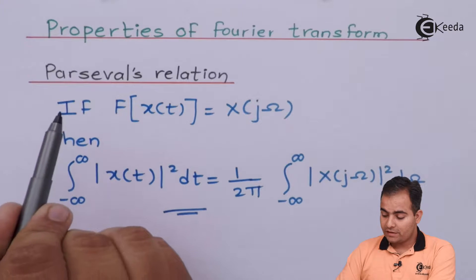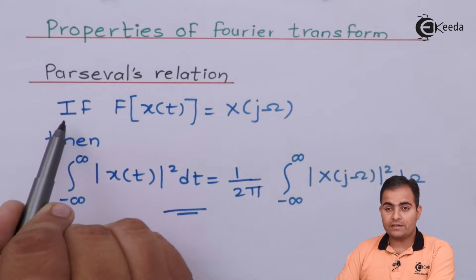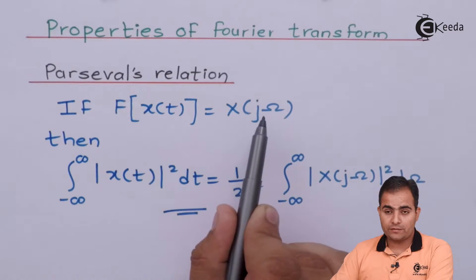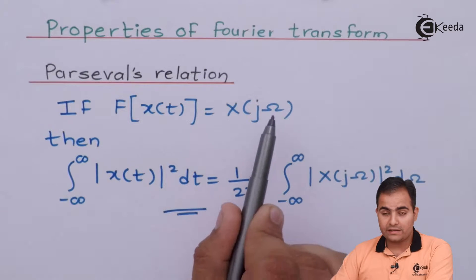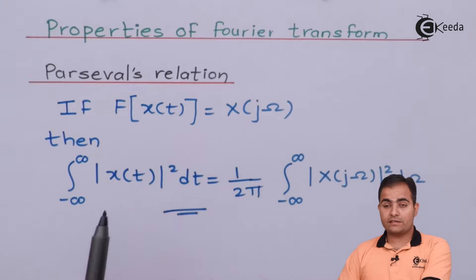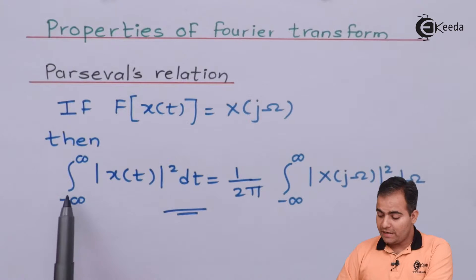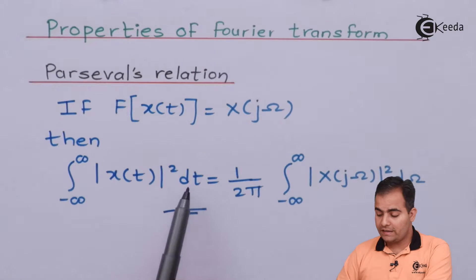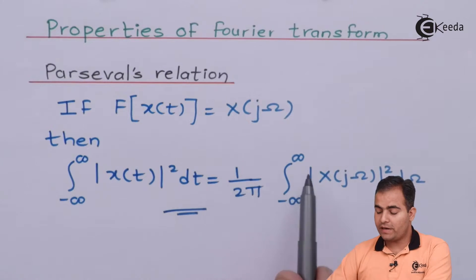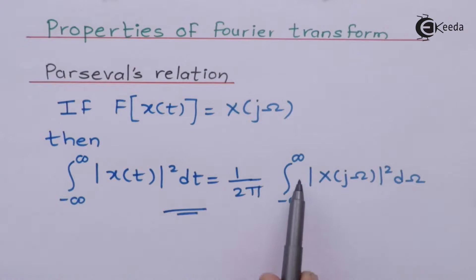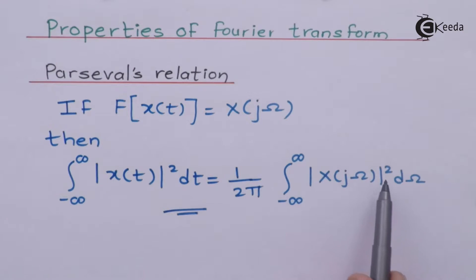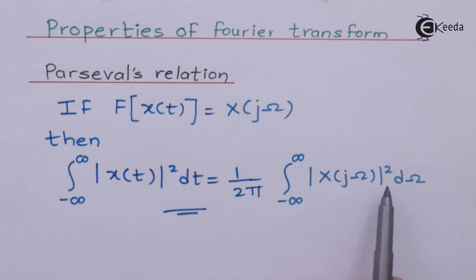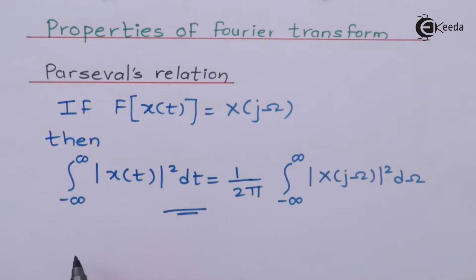In Parseval's relation, the Fourier transform of x(t) is represented by x(jω). The statement is: the integration of mod of x(t) whole square dt equals 1 upon 2π times the integration from minus infinity to infinity of mod of x(jω) whole square dω. We are going to prove this statement right now.